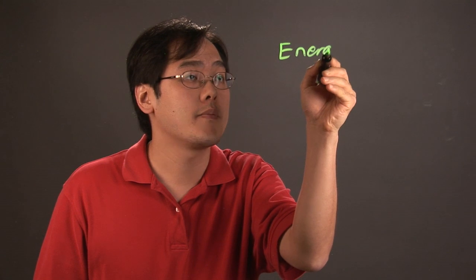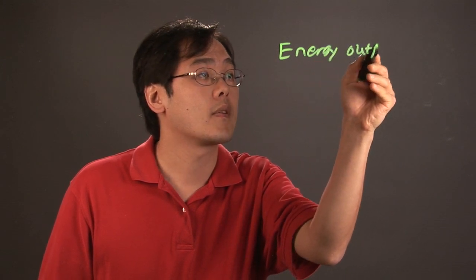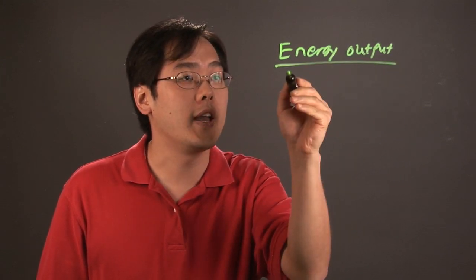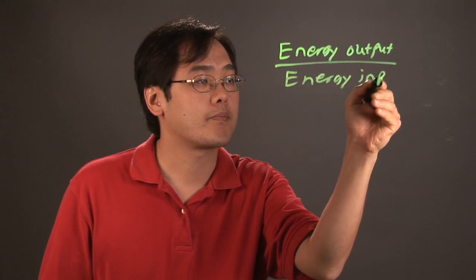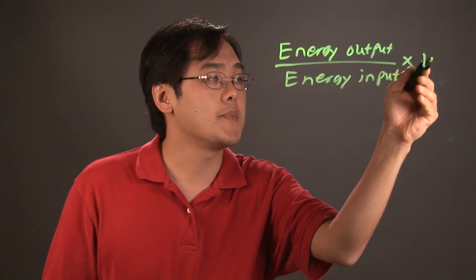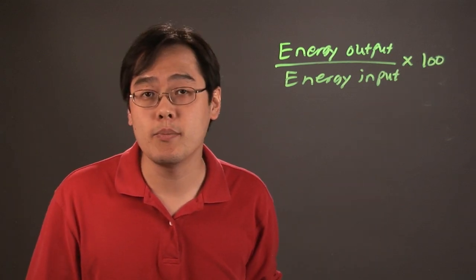The efficiency formula is the energy output divided by the energy input times 100. That's right, the formula is actually pretty simple.